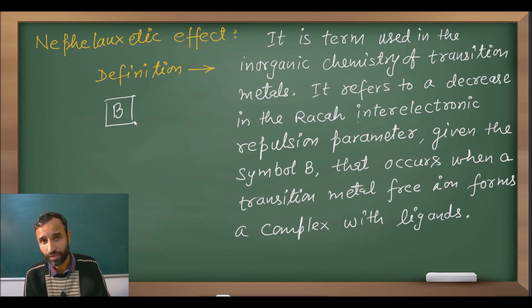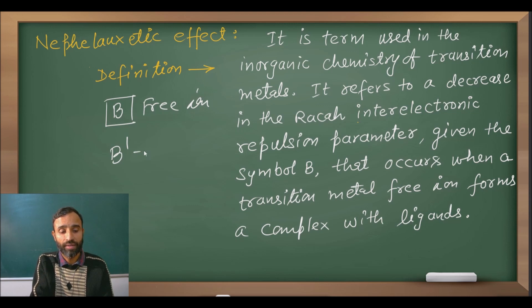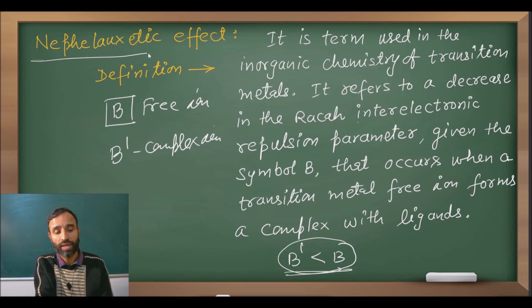When it forms complex with the ligand, the metal and ligand bond is formed. Let us say its Racah parameter is B dash. So what happened is that this Racah parameter value will decrease when that metal forms bond with the ligand, and this effect of decrease in Racah parameter when a metal ion forms complex is called nepheloxetic effect. B is Racah parameter for free ion, B dash for complex ion. So B dash is always less than B and that is called nepheloxetic effect.